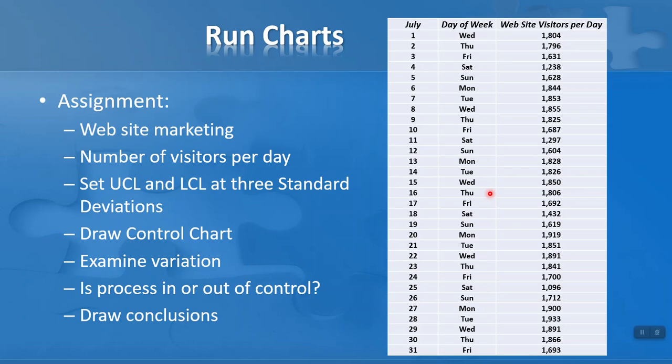In the assignment for this section, we're going to take some data which is website marketing data - the number of website visitors per day, which I've made up, over a period of time. We've got a 31-day July with the days of the week when measurements are taken and the number of visitors per day. I want you to set upper and lower control limits at three standard deviations. Remember, in our how-to video I will show you how to do this. Then draw the control chart, examine what variation you find, answer the question is the process in or out of control, and then draw conclusions from your run chart.